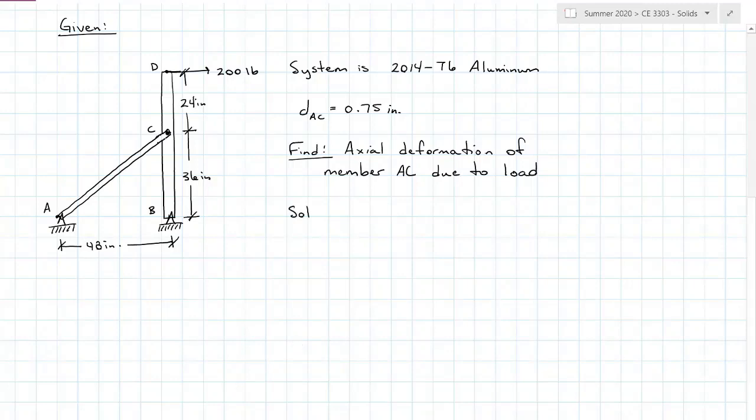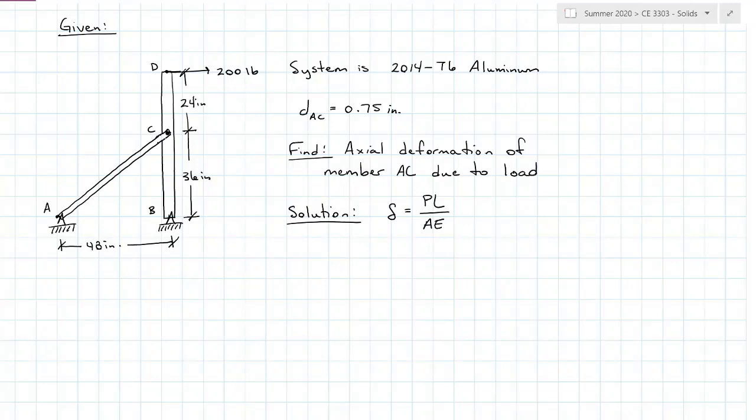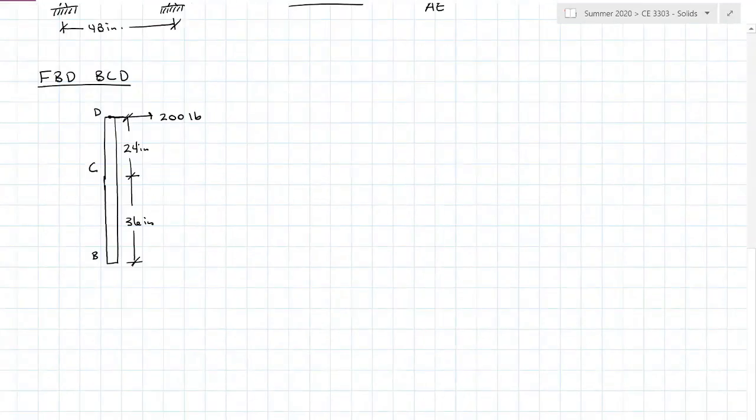My axial deformation equation is PL over AE, so working from left to right, the first thing I need is the axial load in member AC. Let's solve that with a free body diagram. I have my pin reactions at B, so I'll have Bx and By, and then my two force member reaction AC. This is a 3-4-5 slope.